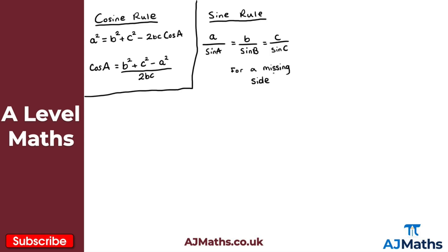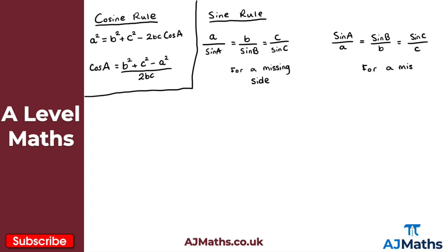If we're looking for a missing angle, we just take the reciprocal: sin(A)/a = sin(B)/b = sin(C)/c. That's for a missing angle.